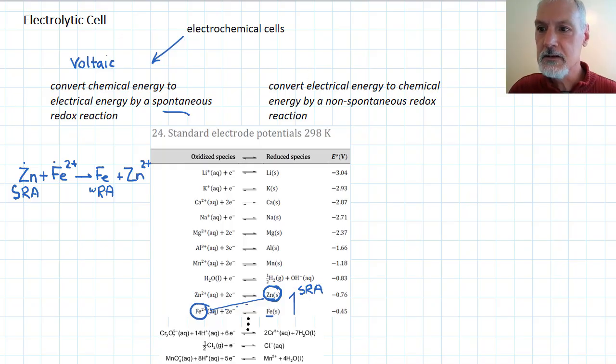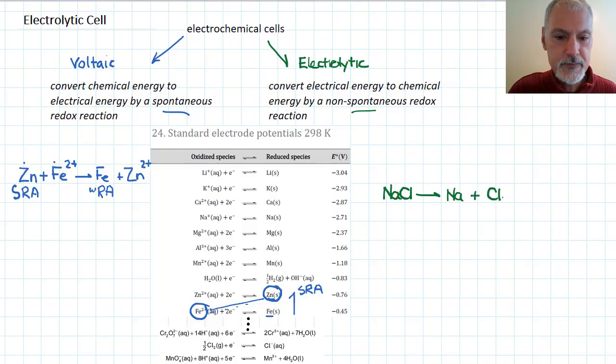Now we're ready to take a look at the electrolytic cell. This one converts electrical energy into chemical energy by means of a non-spontaneous reaction. Electrolytic means to break apart using electricity. Lysis meaning to break. So an example would be taking sodium chloride and breaking it into the elements from which it comes, sodium and chlorine. Now I'm not going to balance it at this point.